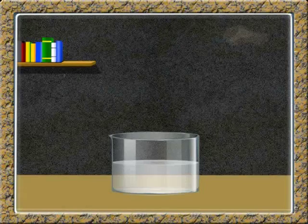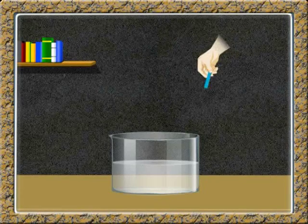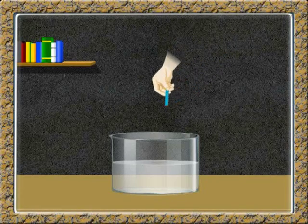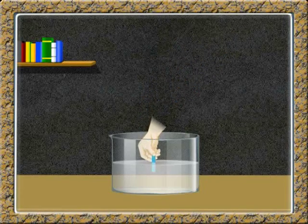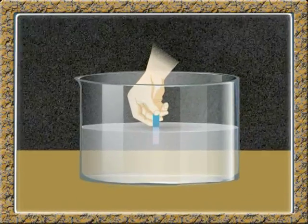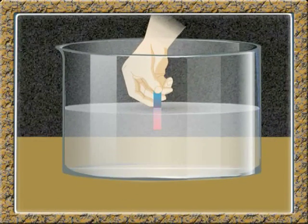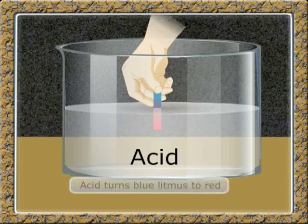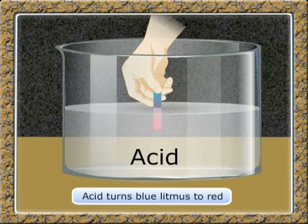Let us take this solution and put blue litmus paper into this. It has changed to red. So the solution must be acidic. Thus, we can say that acid turns blue litmus to red.